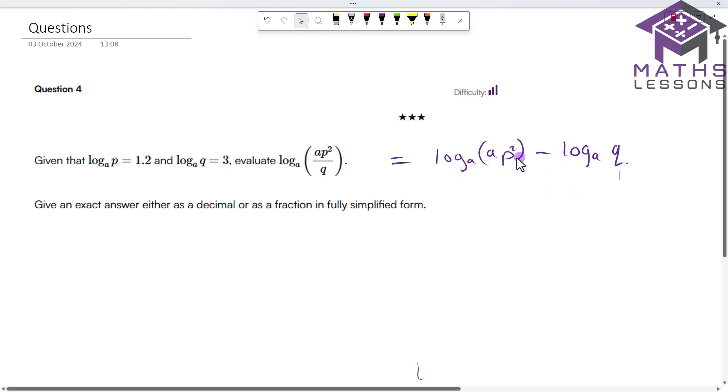Now we're going to separate these two here out by using the times law or the addition law. So we're going to have log a of a plus log a of p squared, and that would be minus log a of q.